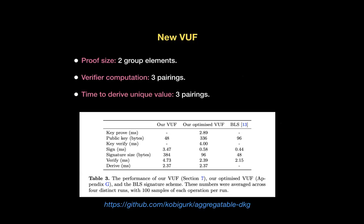We call our unique threshold signature a VUF — a verifiable unique function — and to get the randomness at the end, you hash it. Our proof size is two group elements; BLS is one group element, so we are twice as big. Verifier computation is three pairings, only a little more expensive than BLS. When deriving our unique value at the end, we also need to compute three more pairings.